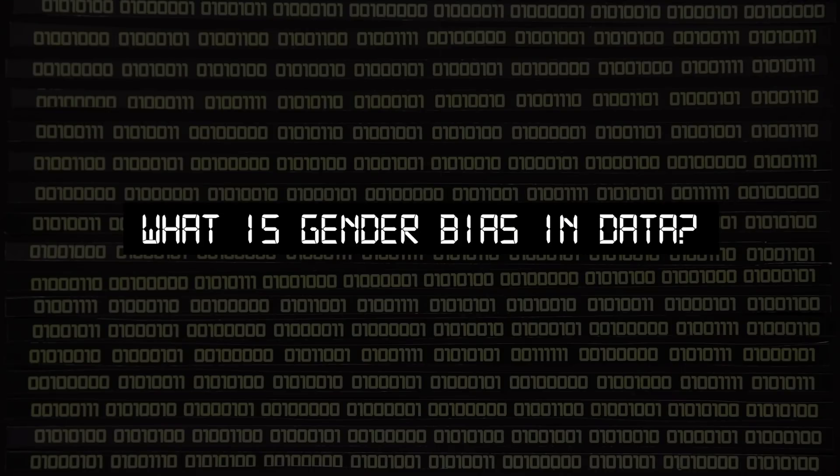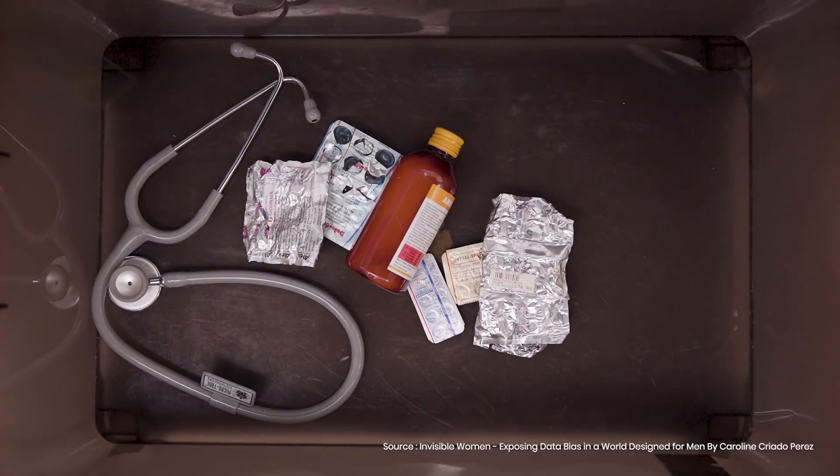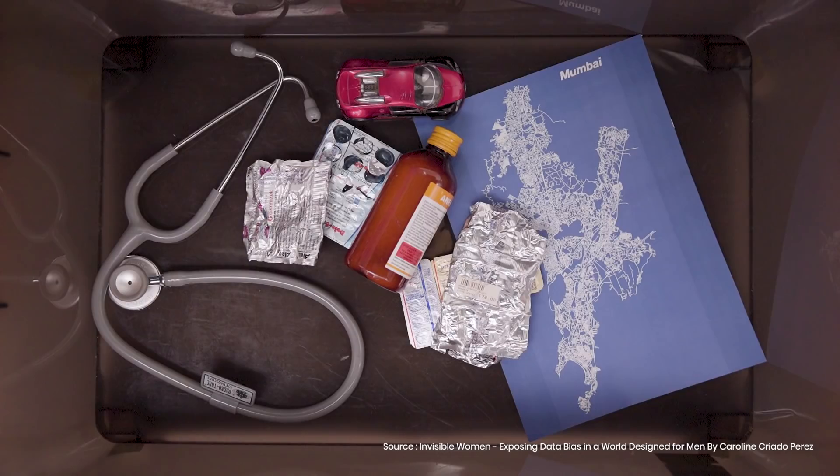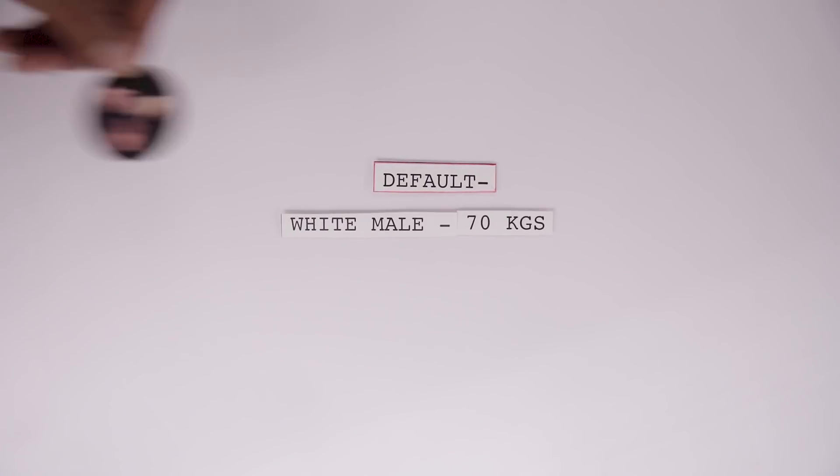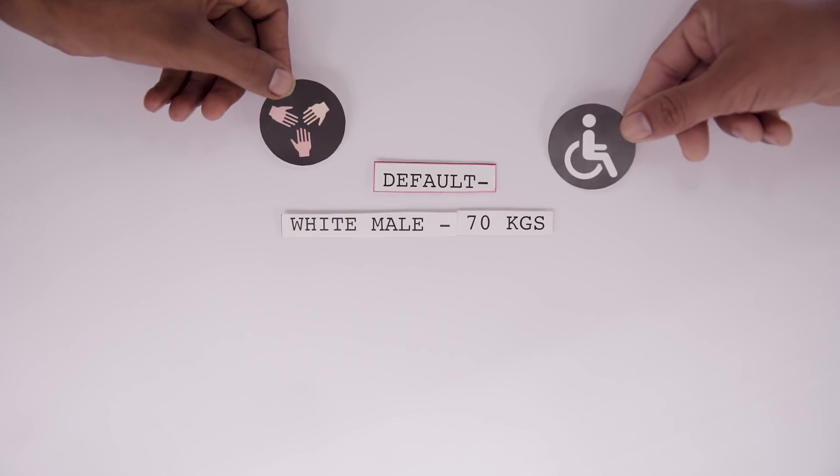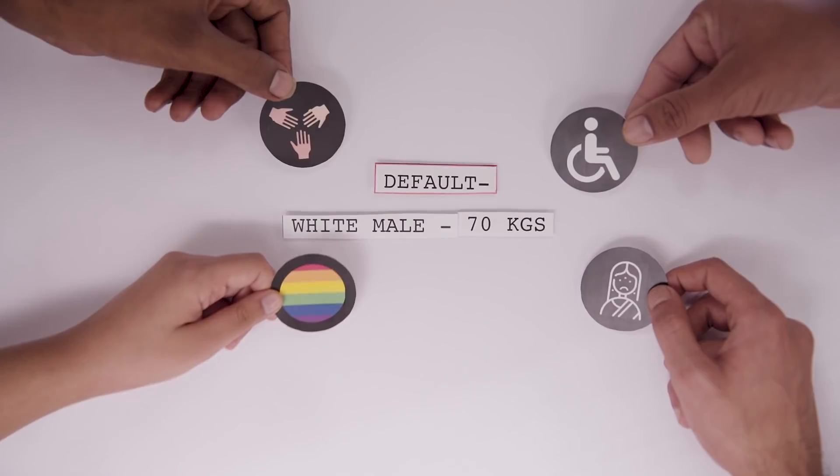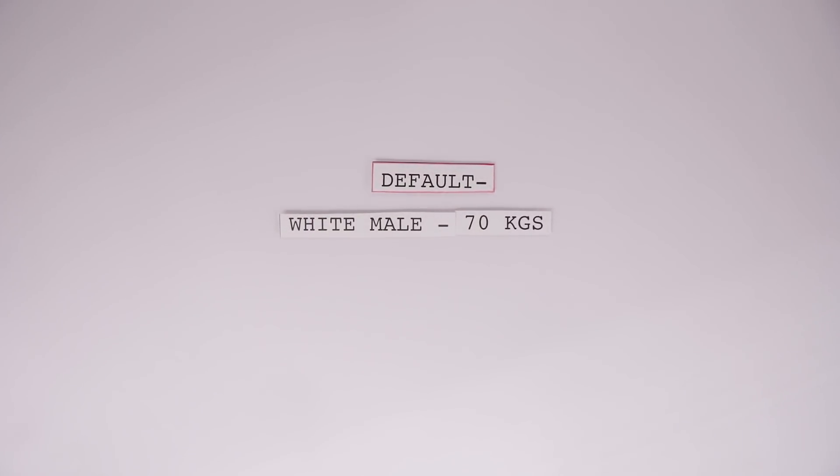What is gender bias in data? For years, medicine, healthcare, driving, and even urban planning have been designed keeping one default in mind: a white male weighing 70 kgs. By using this as the status quo, multiple communities, including people of colour and other marginalised groups, have been left out of the discussion around product testing and safety.